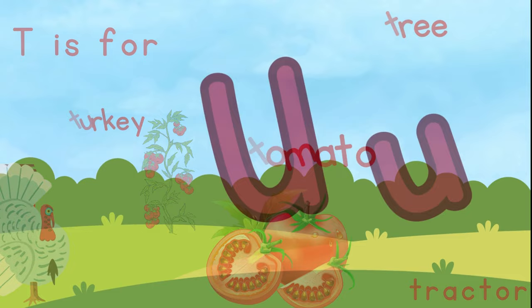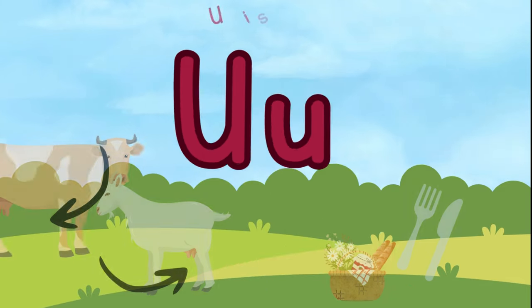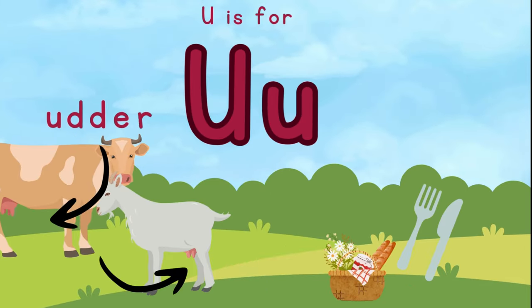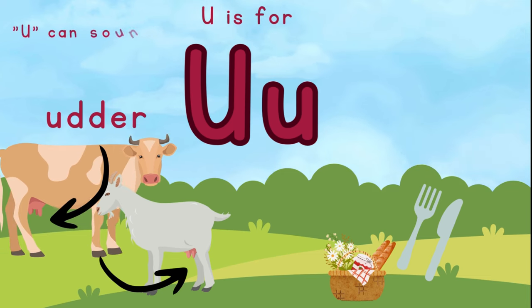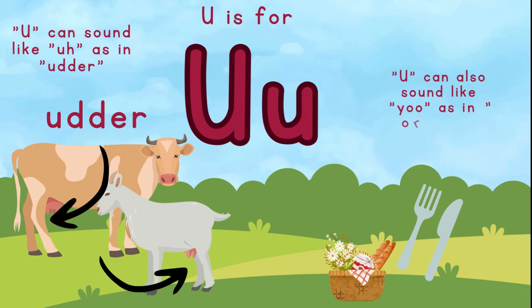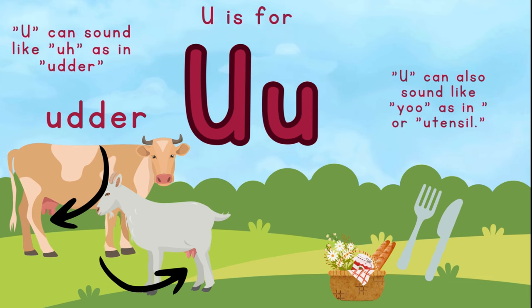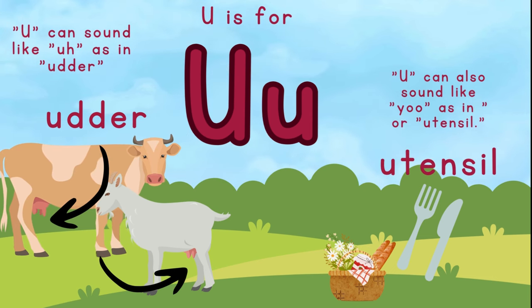This is the letter U. U is for udder. U can sound like a as in udder. U can also sound like U as in utensil. And U is for utensil.